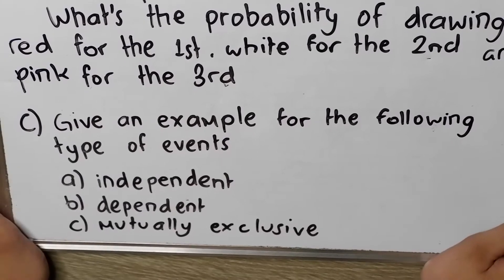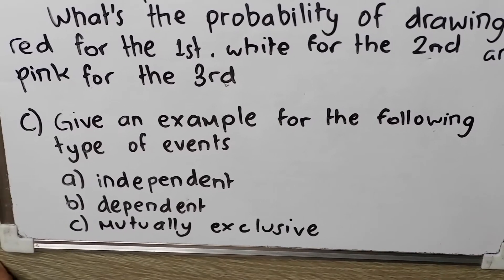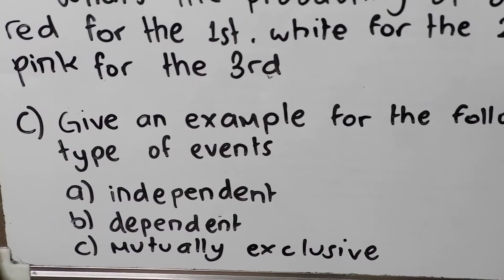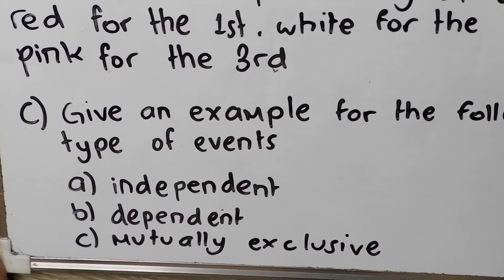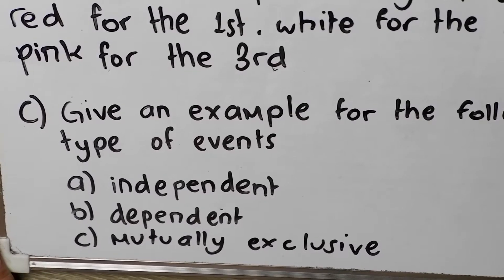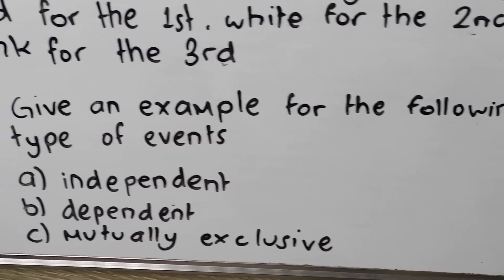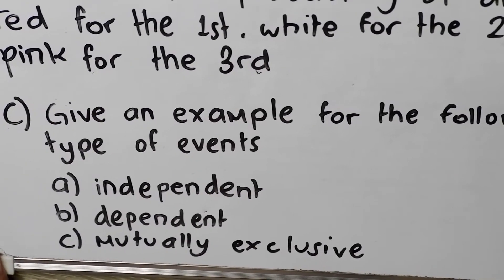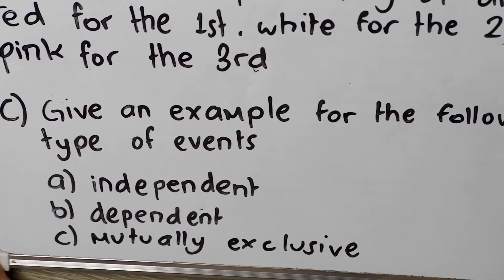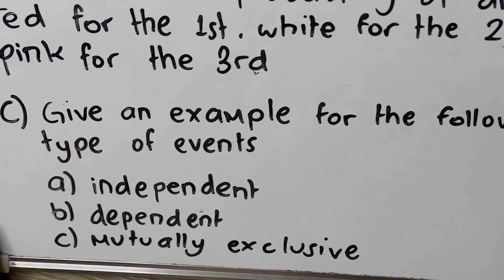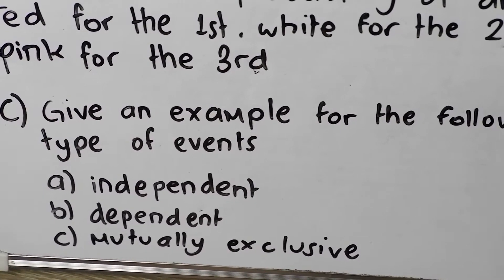This is the third question: give an example for the following types of events. So we have 3 types of events — there is independent, dependent, and mutually exclusive events.